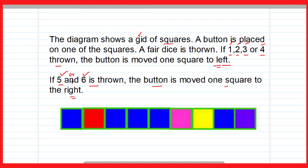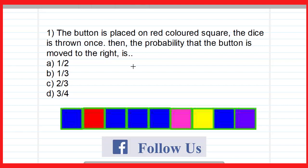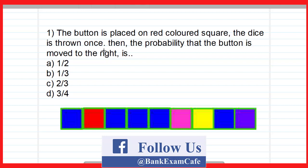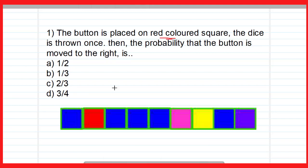You have to answer the given questions with the help of this information. The first question is very simple but still somewhat tricky. The first button is placed on the red colored square. The dice is thrown once. Then what is the probability that the button is moved to the right?